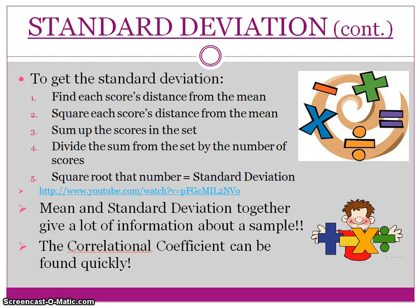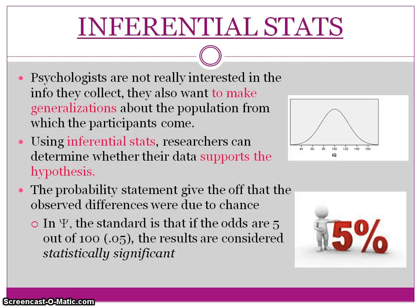With standard deviation, the correlational coefficient — which measures how much two variables are related to one another — can be found very quickly. Inferential statistics are used to determine whether or not the data supports the hypothesis. Psychologists use descriptive statistics first, but you cannot make generalizations from descriptive statistics alone — we use inferential statistics to do so. The probability statement of inferential statistics gives us the actual correlation coefficient.